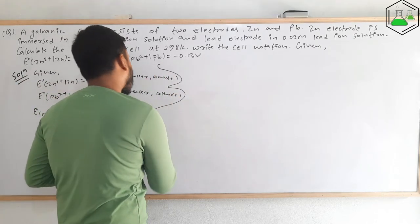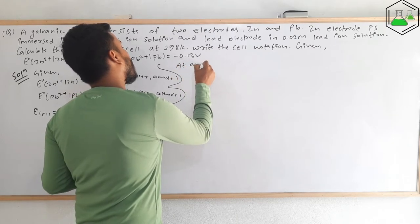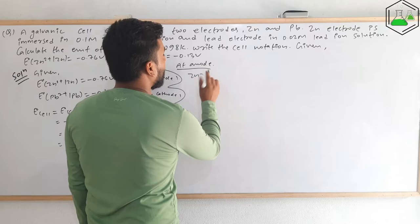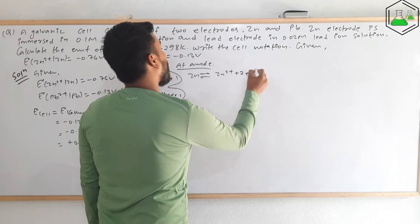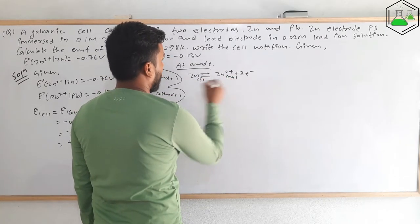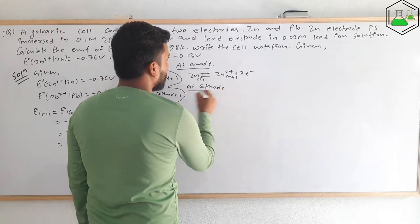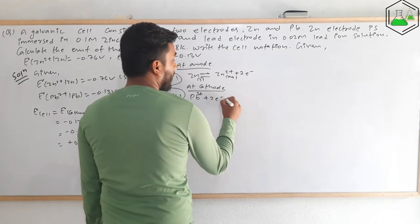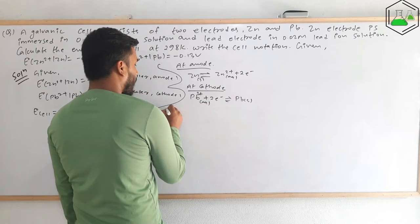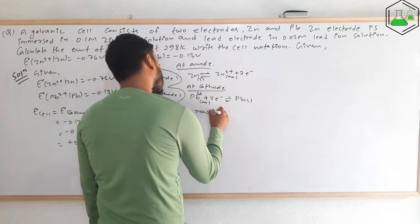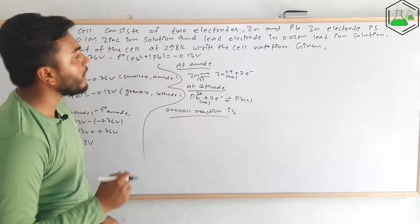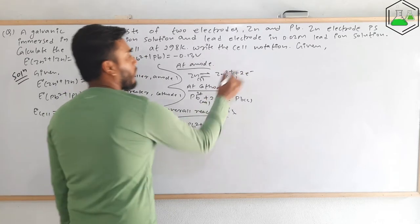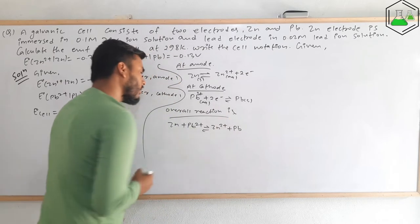At the anode, oxidation: Zn(s) → Zn²⁺(aq) + 2e⁻. At the cathode, reduction: Pb²⁺(aq) + 2e⁻ → Pb(s). Adding the half-reactions, the electrons cancel, giving the overall reaction: Zn + Pb²⁺ → Zn²⁺ + Pb.